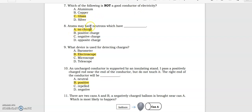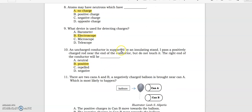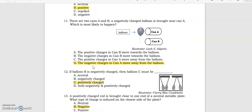Which of the following is not a good conductor of electricity? Glass. Atoms may have neutrons which have no charge. What device is used for detecting charges? Electroscope. An uncharged conductor is supported by insulating stand. I pass a positively charged rod near the end of the conductor but do not touch it. The right end of the conductor will be positive.